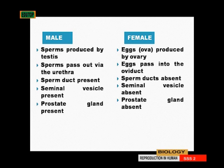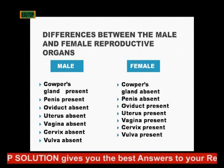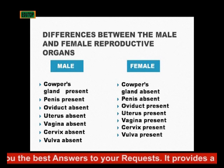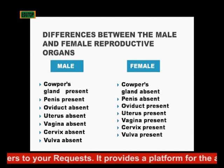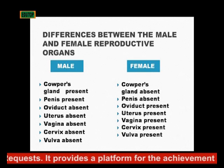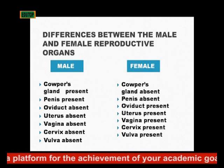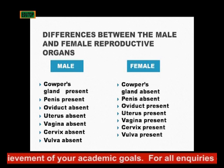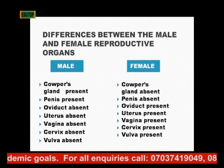The prostate gland is found in the male but not in the female. The Cowper's gland is also present in the male and absent in the female. The penis is present in the male but not in the female. The oviduct is absent in the male but present as the fallopian tube in the female. The uterus or womb is absent in the male but present in the female. The vagina is absent in the male and present in the female. The cervix is absent in the male and present in the female. The vulva is absent in the male and present in the female.